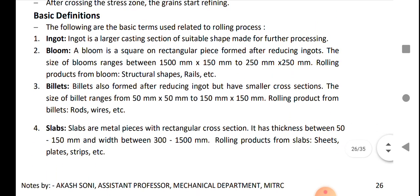Basic definitions: The following are the basic terms used related to rolling process. Ingot is a large casting section of suitable shape made for further processing. Bloom is a square or rectangular piece formed after reducing ingot. The size of the bloom ranges between 150 mm by 150 mm to 250 mm by 250 mm. Rolling products from bloom include structural shapes and rails.